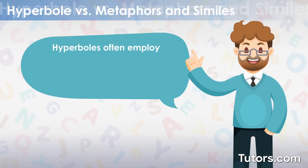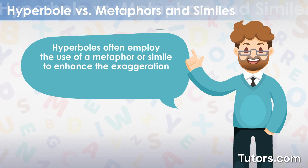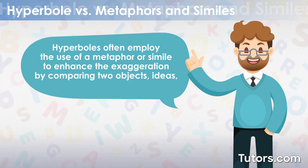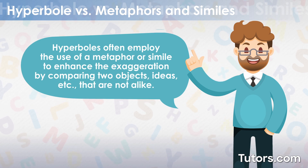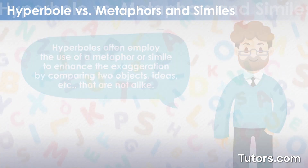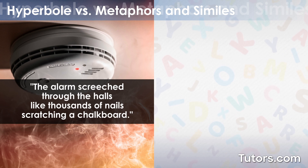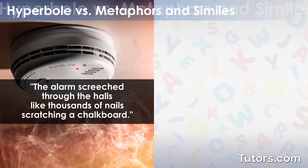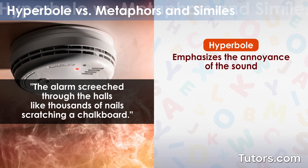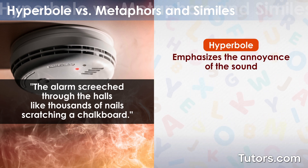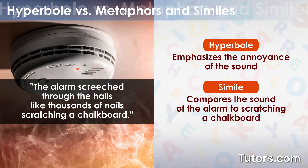Hyperboles often employ the use of a metaphor or simile to enhance the exaggeration by comparing two objects, ideas, etc. that are not alike. In this example: the alarm screeched through the halls like thousands of nails on a chalkboard. The hyperbole is emphasizing the annoyance of the sound using the simile 'like nails on a chalkboard.'